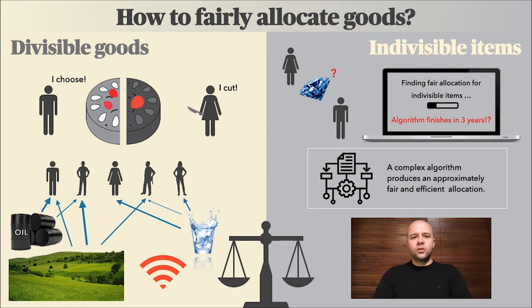This process is called cut and choose, and it is recognized even in the Bible. Upon arriving on a new land, Abraham devised the land division into equal parts and Lot chooses a part to keep. The key property here, for both cake and land, is divisibility — we can cut them in any way.